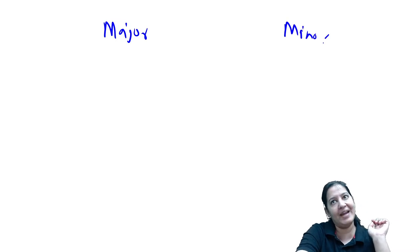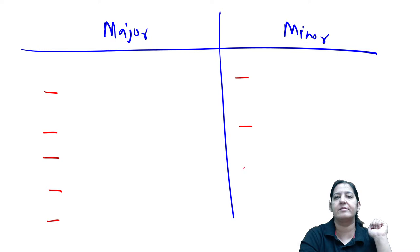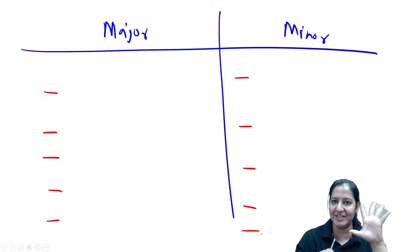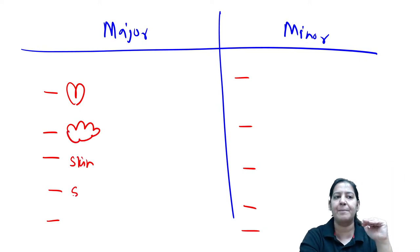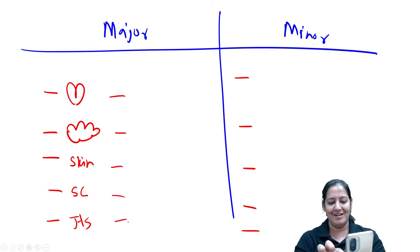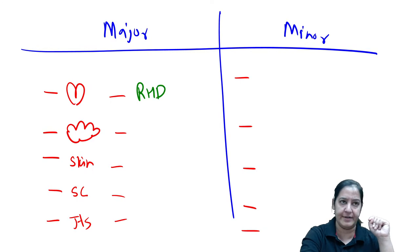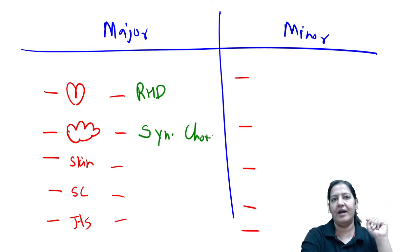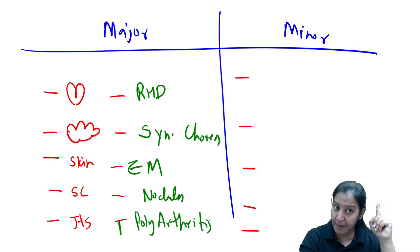Major criteria: heart — rheumatic heart disease (carditis); brain — Sydenham's chorea; skin — erythema marginatum; subcutaneous tissue — subcutaneous nodules; joints — migratory polyarthritis. Minor criteria: fever, arthralgia (not arthritis — compare the two), elevated lab values (ESR, CRP, WBC), and prolonged ECG PR interval.